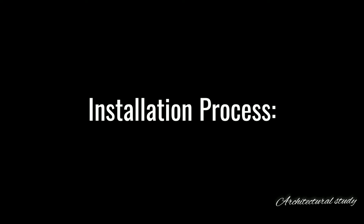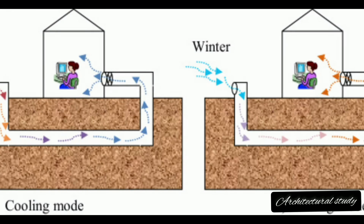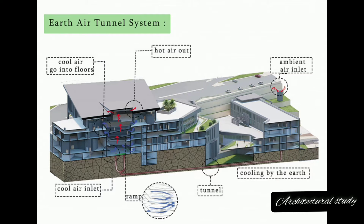Installation Process — Site Assessment: Analyze soil type, climate data, and building requirements to determine the optimal pipe length, diameter, and layout.